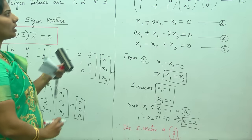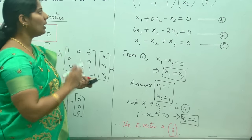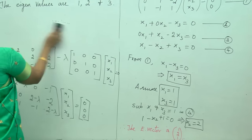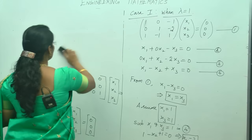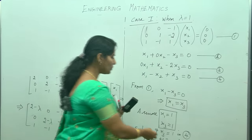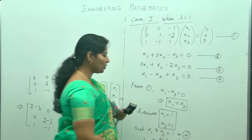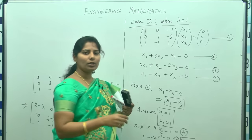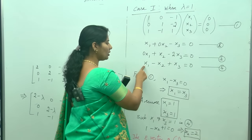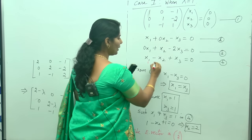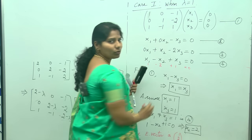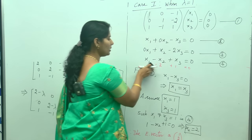Therefore the eigenvector for lambda equals 1 is [1, 2, 1]. To verify: substitute [1, 2, 1] into the third equation: 1 minus 2 plus 1 equals 0, which gives 0 equals 0. The equation is satisfied, so the eigenvector is correct.